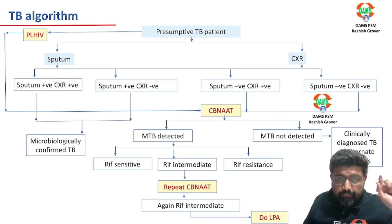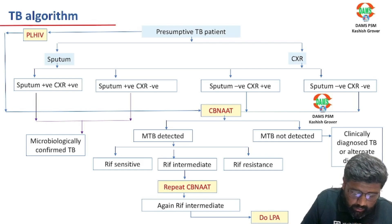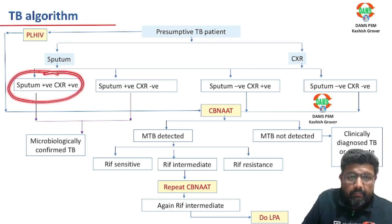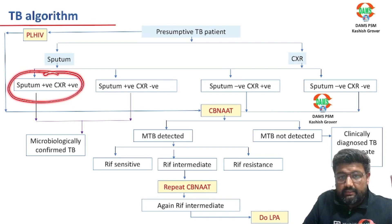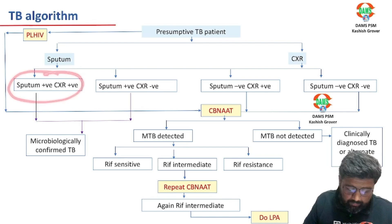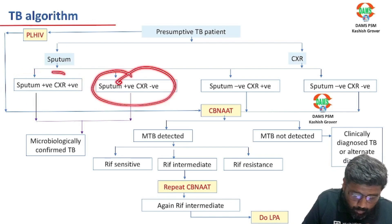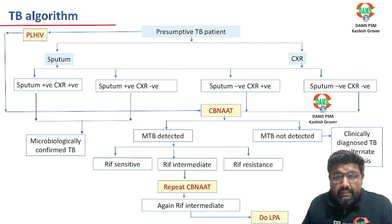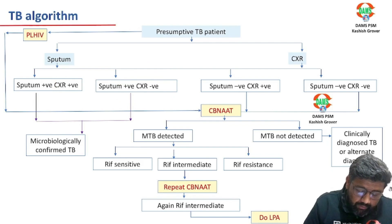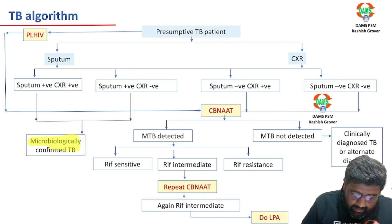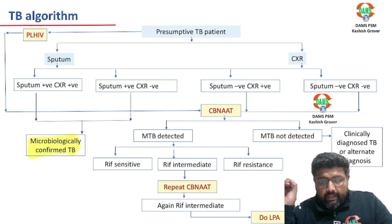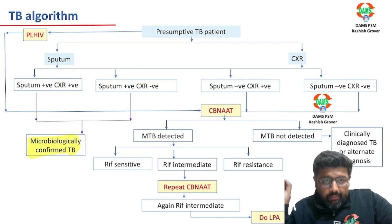There are two scenarios. Scenario one: sputum positive and chest X-ray positive. Scenario two: sputum positive and chest X-ray negative. When sputum is positive, irrespective of whether chest X-ray is positive or not, we label it as microbiologically confirmed TB.